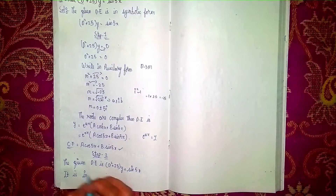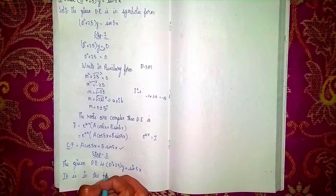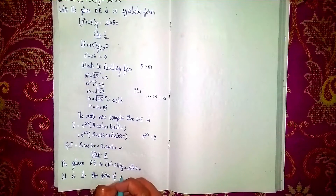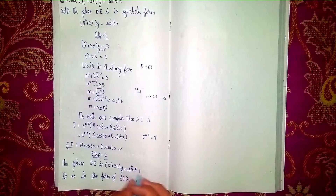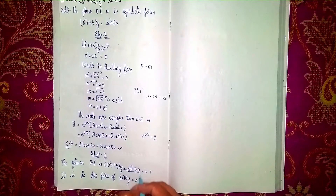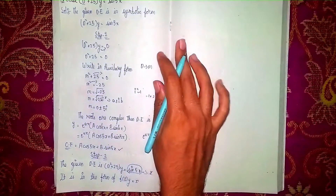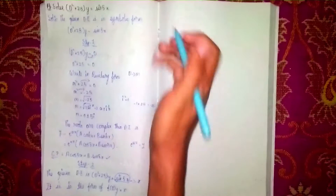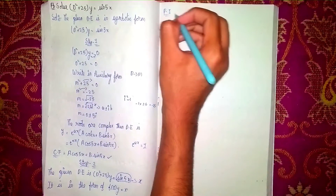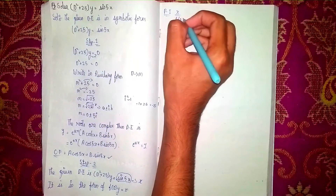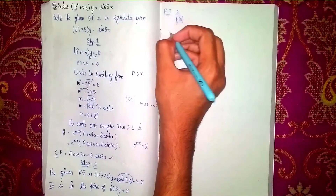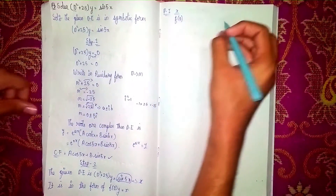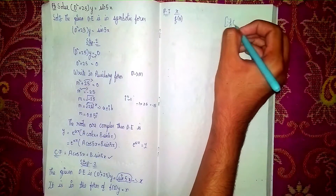It is in the form f(D)y equals X, where X is a trigonometric function. Since there is a trigonometric function present, we use a special case formula. Therefore, the particular integral PI equals 1 over f(D) applied to sin(5x).